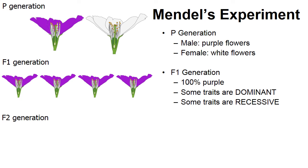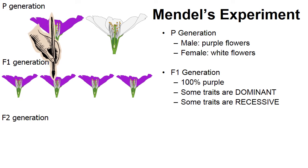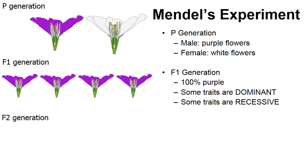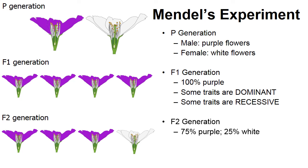Mendel moved on with his experiment. He allowed the plants of the F1 generation to self-pollinate — he transferred pollen from the male parts to its own female parts, since plants often have male and female parts and can pollinate themselves. He collected the seeds of the F1 generation, grew them in his garden, and this became the F2 generation. What he noticed was that for every three plants with purple flowers, one would have white — so 75% grew purple and 25% grew white.